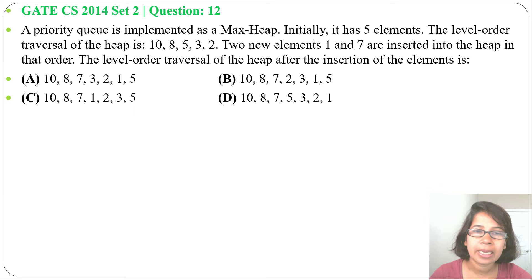of the heap is 10, 8, 5, 3, 2. Two new elements 1 and 7 are inserted into the heap in that order. The level-order traversal of the heap after the insertion of the elements is... and four options are given.